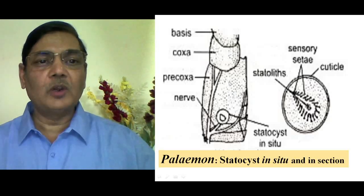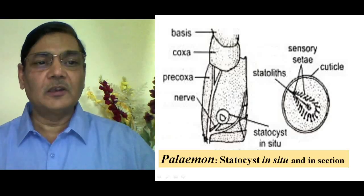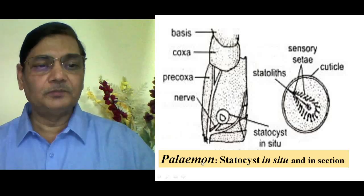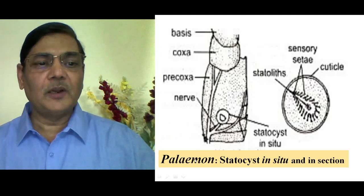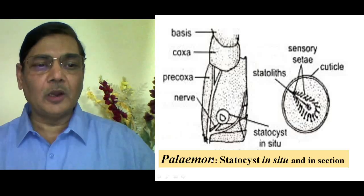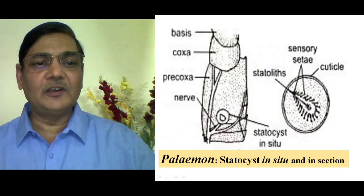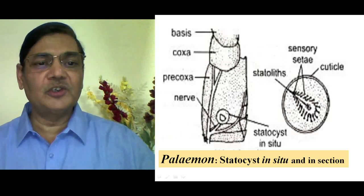You can have a clear look at a Statocyst if you dissect an arthropod animal like a prawn. Its generic name is Palaemon. This animal is available in laboratories or can be purchased from the market. Palaemon possesses 19 pairs of appendages, and the first pair is the antennule. You can see the presence of Statocyst at the basal portion of the antennule. The basal segment of the antennule is the Protopodite, and the Statocyst is located there.